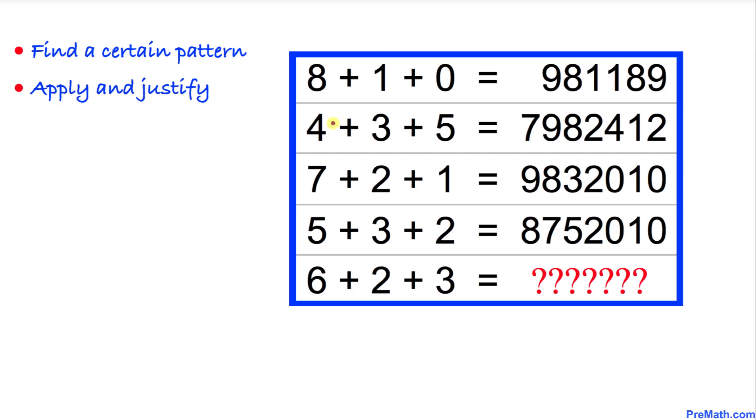Now let's go ahead and focus on the second row. We are going to apply the same rule to this second row. Once again, four plus three is seven, four plus five is nine, and three plus five is eight.